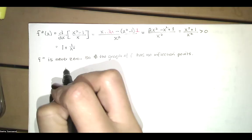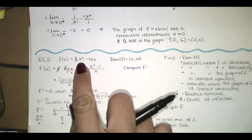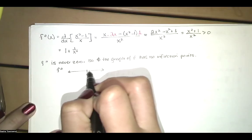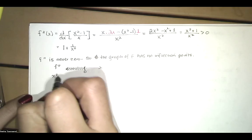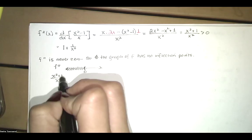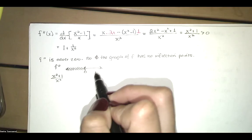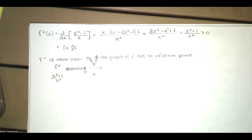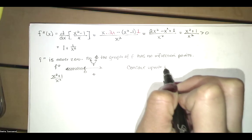There is an x value where f double prime is undefined, and that's x equals 0. But looking at the domain — which is 0 to infinity — x equals 0 is not included. So on the domain from 0 to infinity, f double prime equals (x squared plus 1) divided by x squared is positive divided by positive, which is positive. So the graph is concave upward on 0 to infinity.